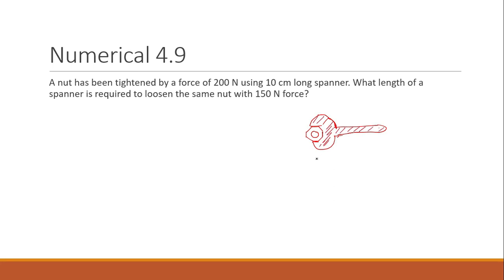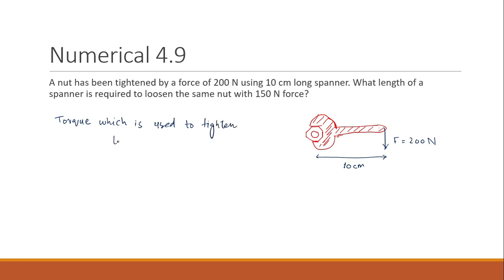Consider this is our spanner — it has a length of 10 centimeters. By applying a force of 200 newtons the nut was tightened. First we have to calculate the torque which is used to tighten the nut. Torque equals r times F, where r is the moment arm, which equals 10 centimeters.